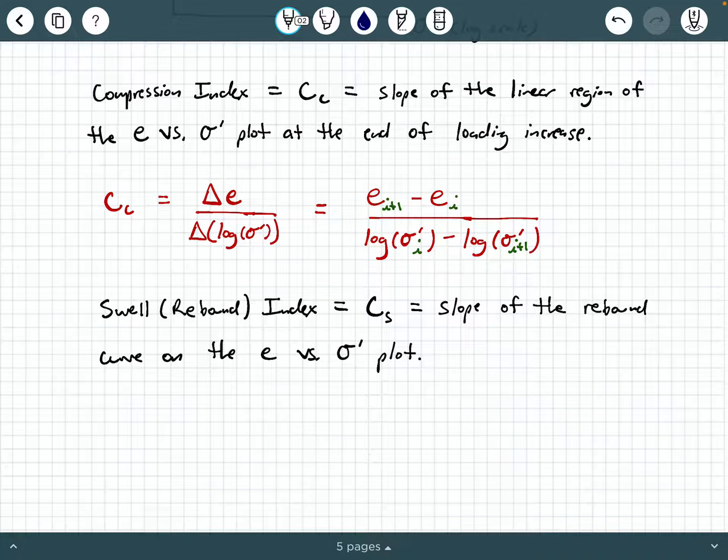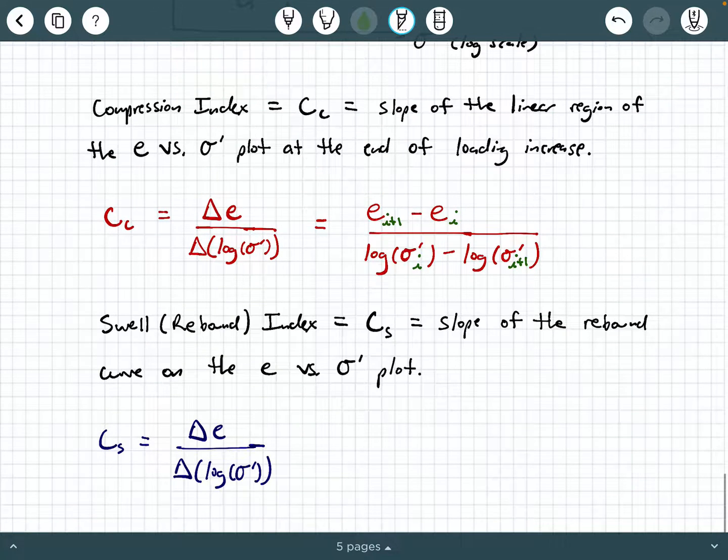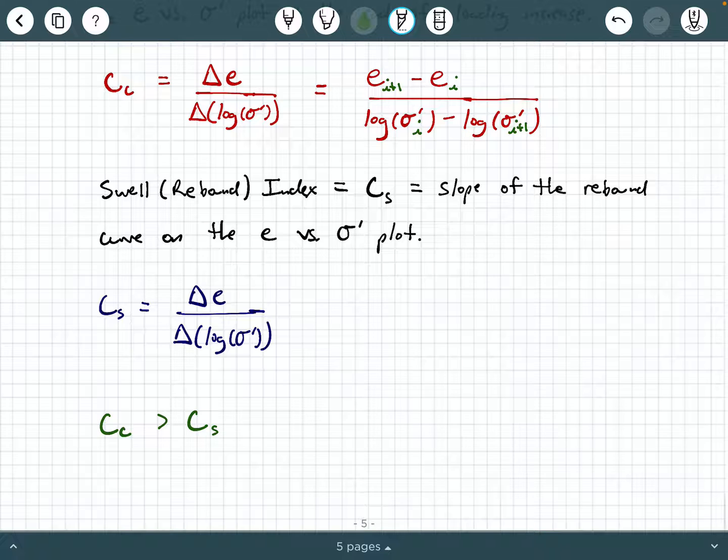So again, C sub S will still be in the form of delta e divided by delta log effective stress, but you got to be careful. You're on a different part of the data curve. So just be very careful with that. In general, one thing you can always mentally check yourself on is that C sub C should always be bigger than C sub S. So this compression index C sub C should always be a steeper slope or a larger numerical value than the swell index C sub S. So that's always a way to kind of make sure you're on the right track with things.